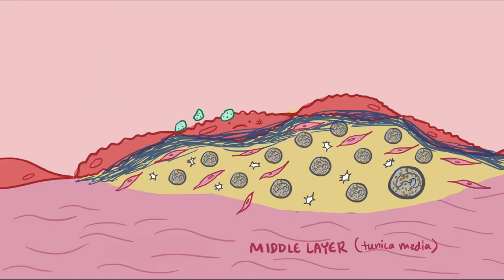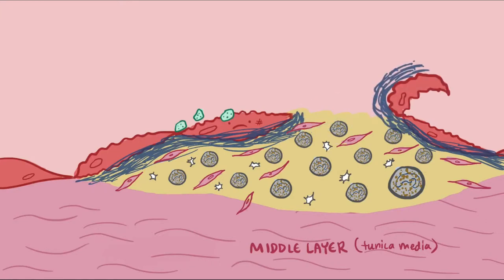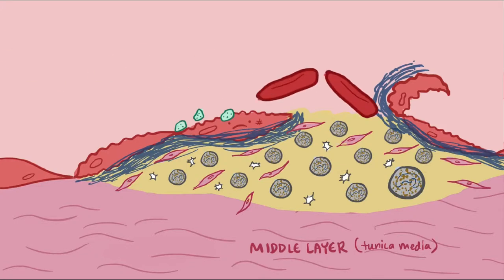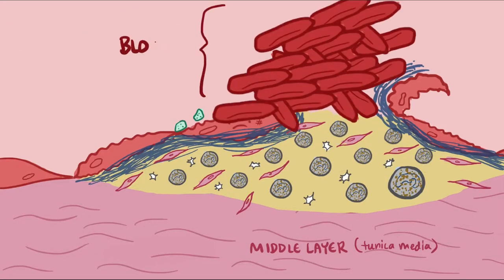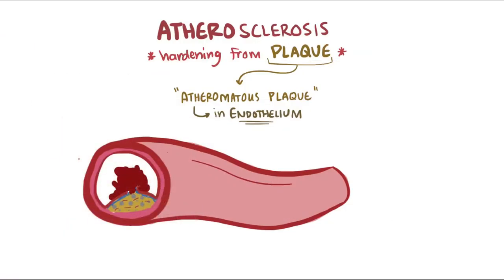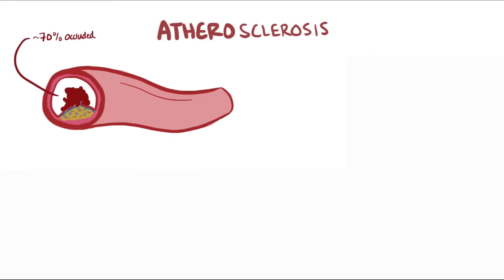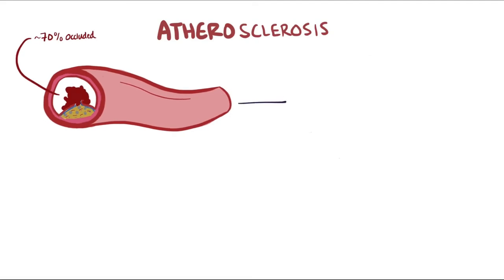From time to time, that fibrous cap can crack and expose the underlying thrombogenic foam cells to blood. When this happens, within moments you can see a blood clot start to form within the already partially occluded artery, quickly leading to even less blood being able to flow by. After about 70% of the blood vessel is occluded from the plaque and the new overlying blood clot, cell injury and death begin in the areas that were relying on that blood flow.